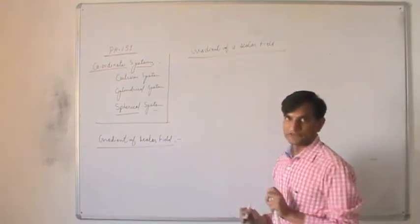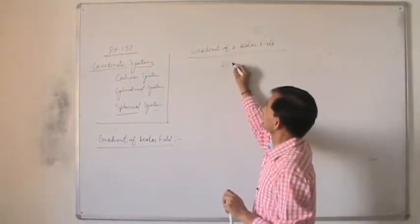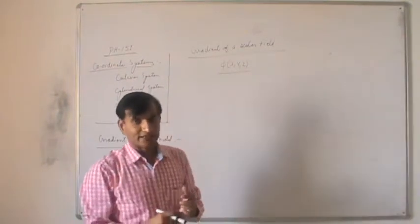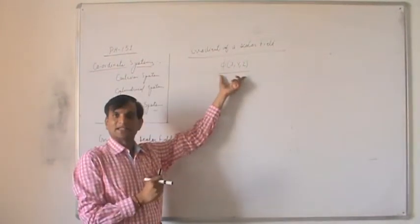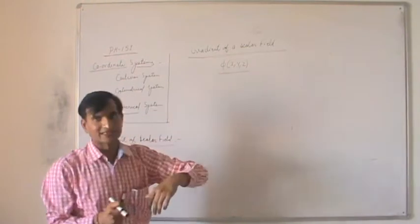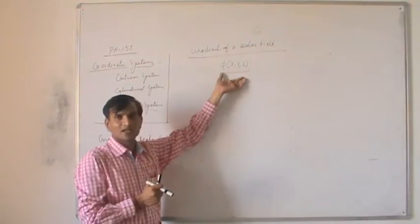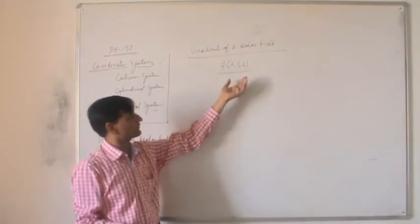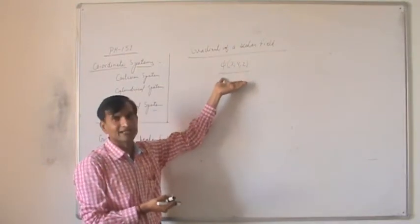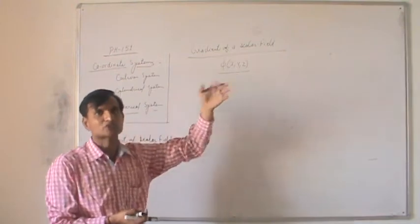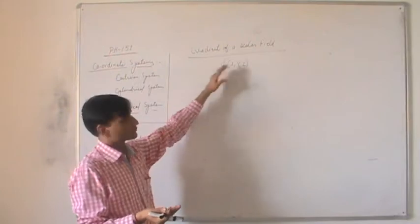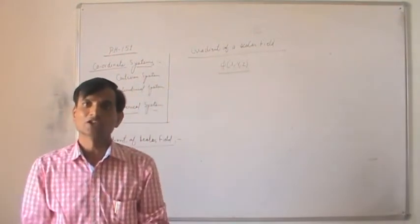A scalar field means a physical quantity defined by a scalar function. Suppose this is temperature — it describes the value of temperature in the whole space. You substitute values of x, y, z to obtain the value of phi for that particular point. So a scalar function gives information about a scalar quantity in the whole space.